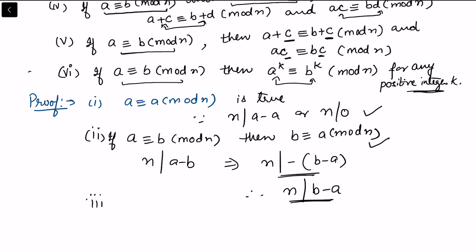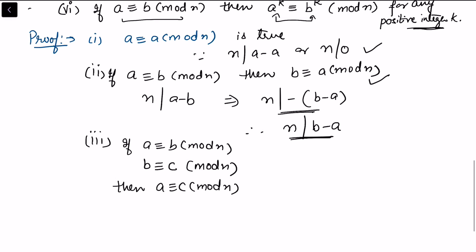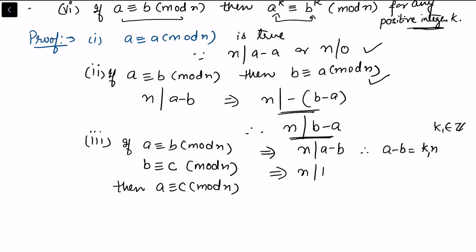For property three, if a is congruent to b modulo n and b is congruent to c modulo n, we want to show that a is congruent to c modulo n. From the first, n divides a minus b, so a minus b equals k1·n for some integer k1. From the second, n divides b minus c, so b minus c equals k2·n.